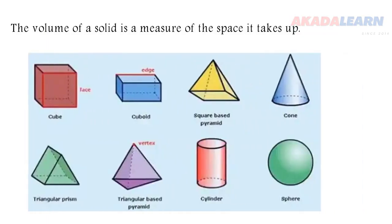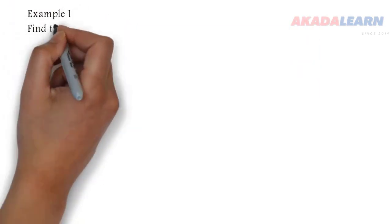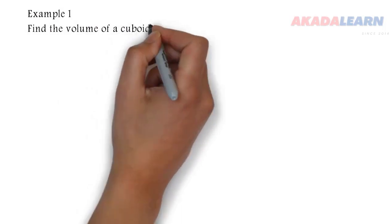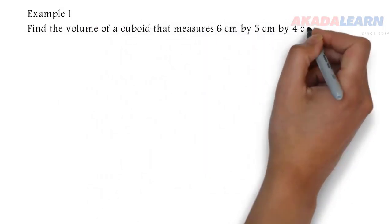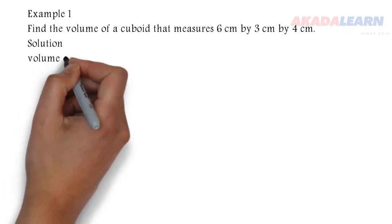So here are some solid shapes. Let's see example 1 now. Find the volume of a cuboid that measures 6 cm by 3 cm by 4 cm.